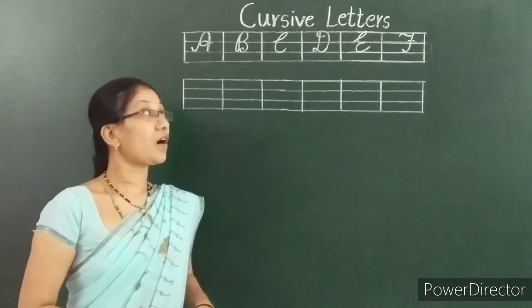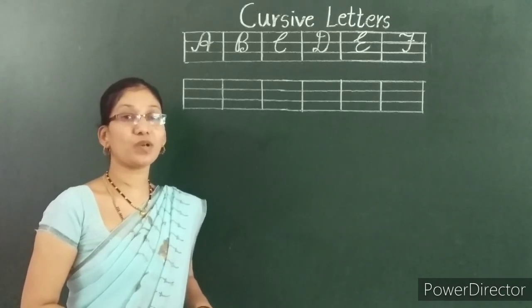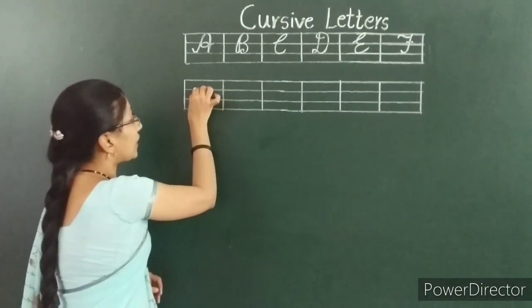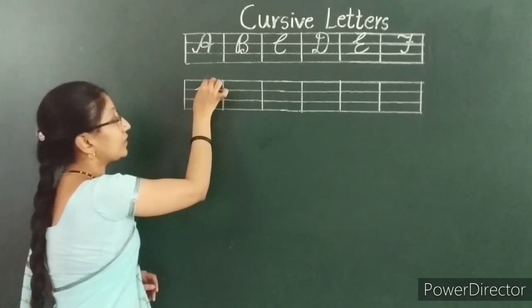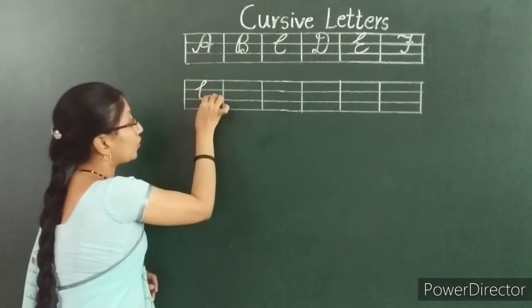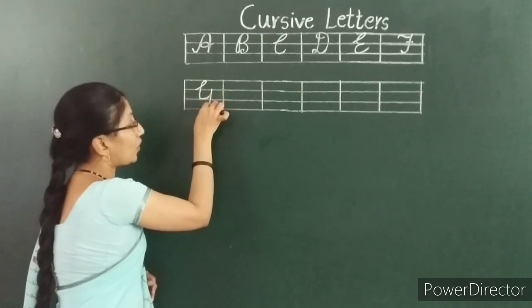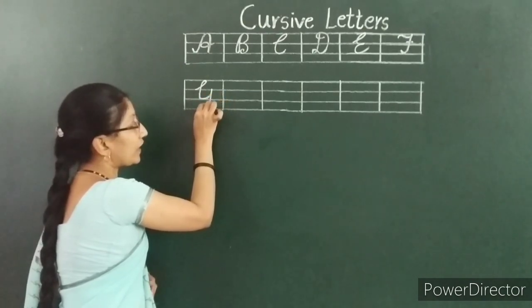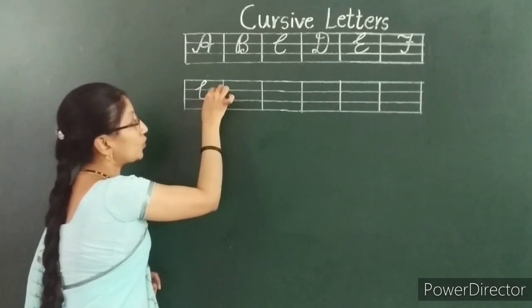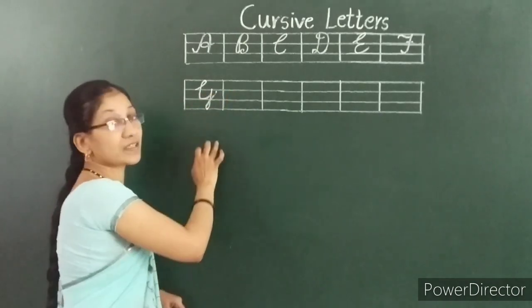So, after F which letter comes? G. I will show you now how to write G. It starts from here. Take a loop, move it up, come down. It touches both lines. Again, a big loop, then move to second line. This is G.